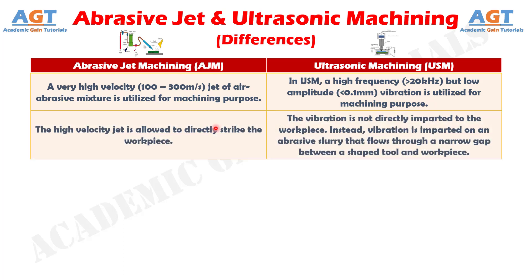Number 2: In abrasive jet machining, the high velocity jet is allowed to directly strike the workpiece, whereas in ultrasonic machining, the vibration is not directly imparted to the workpiece. Instead, vibration is imparted on an abrasive slurry that flows through a narrow gap between a shaped tool and the workpiece.